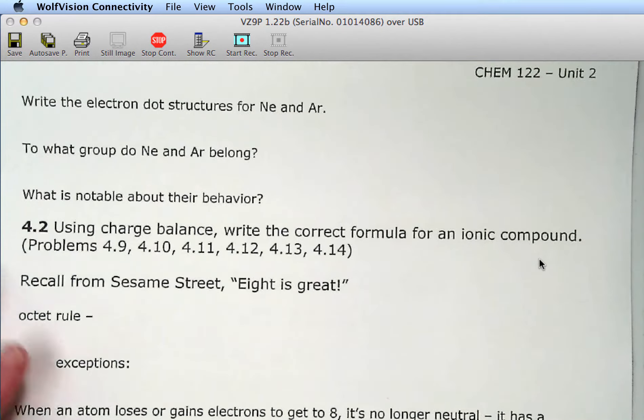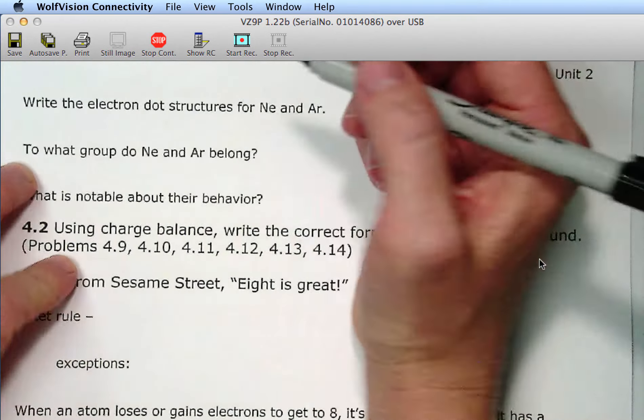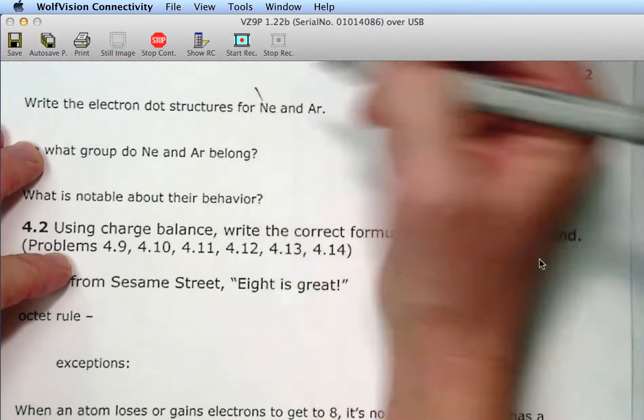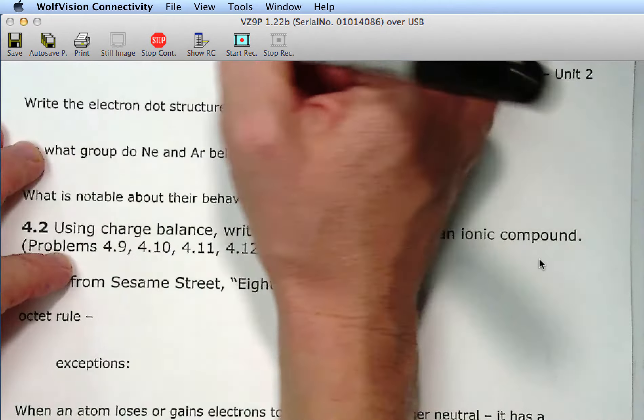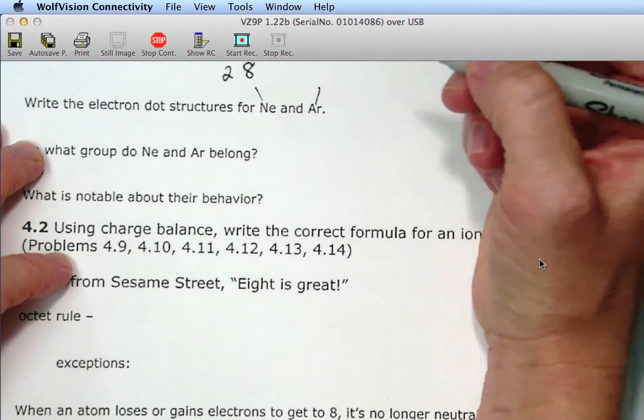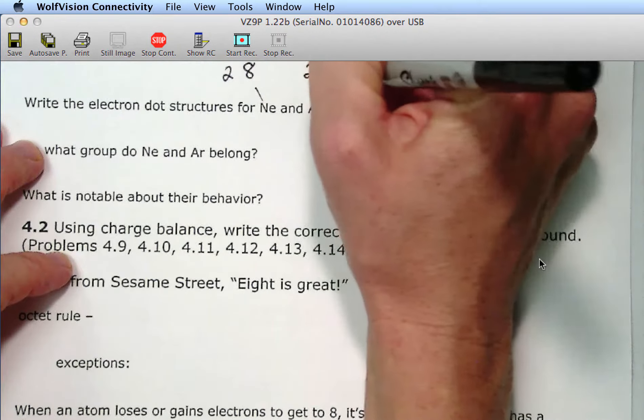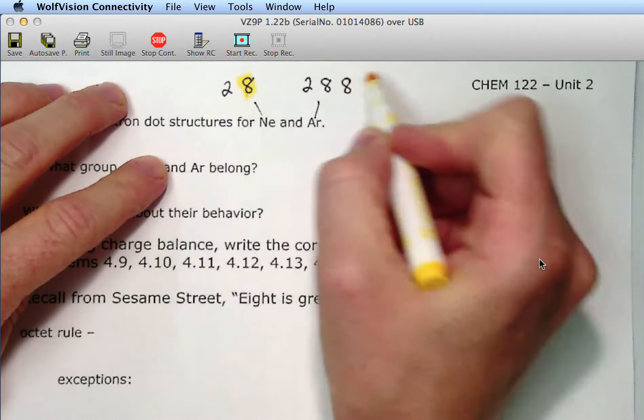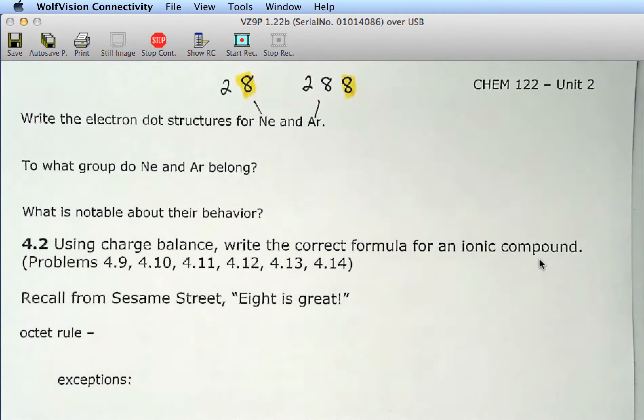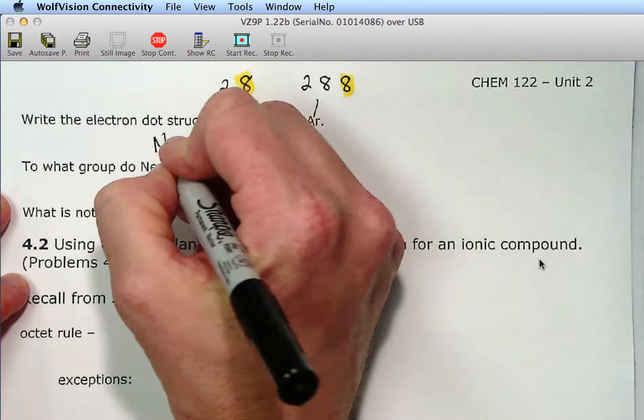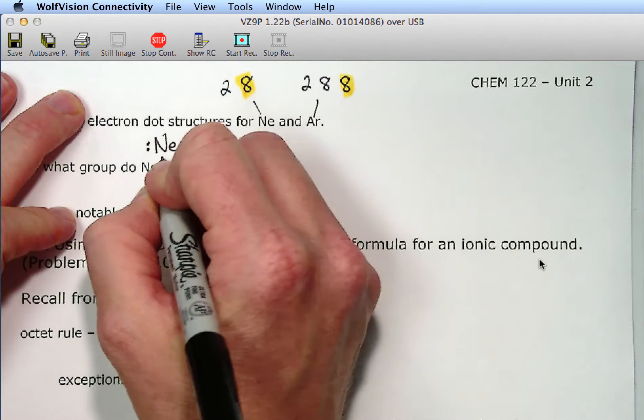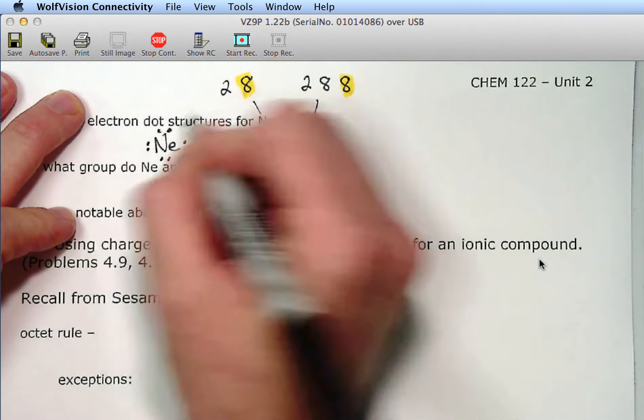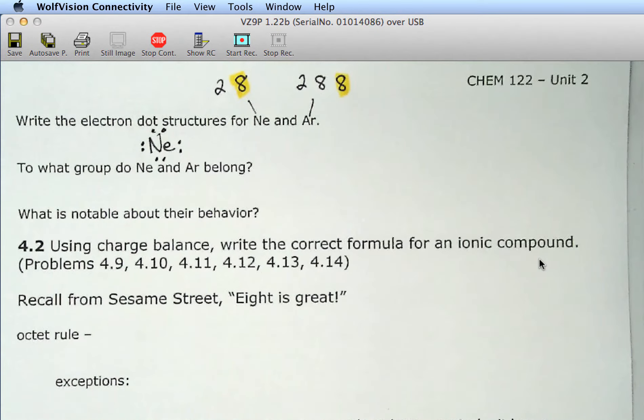So on the next page, I want you to write the electron dot structures for neon and argon. So, how many valence electrons are in neon and argon? Eight. So, the electronic configuration for neon, which I didn't ask you for, is two, eight. And argon is two, eight, eight. So, the number of valence electrons in each of them is eight. So, the electron dot structure for neon, which is to have paired electrons on every side of neon. Same thing with argon.